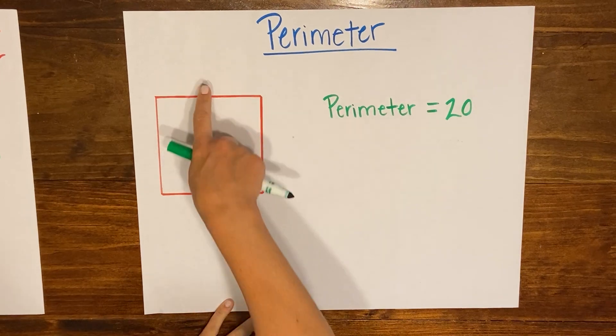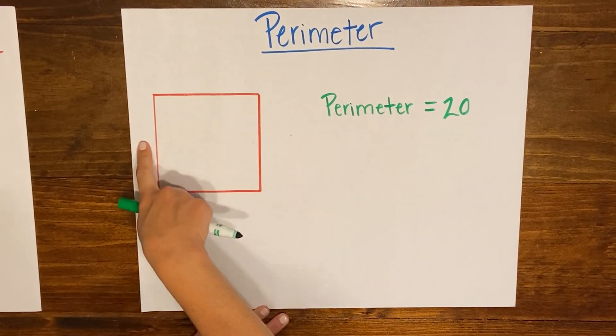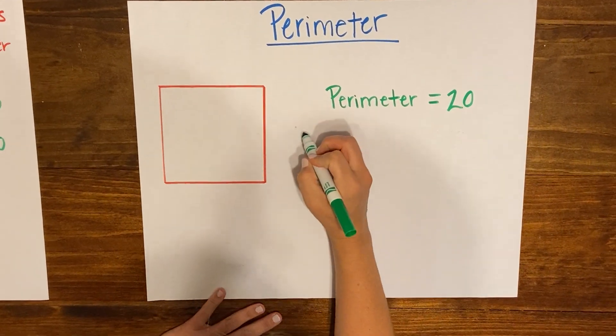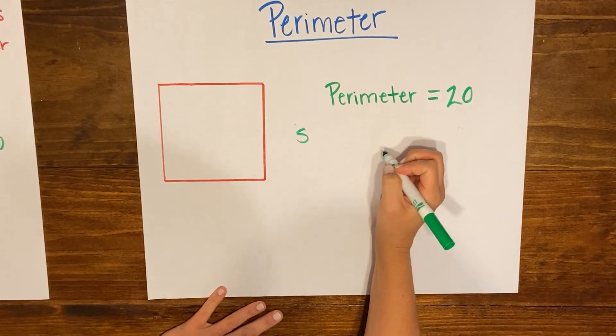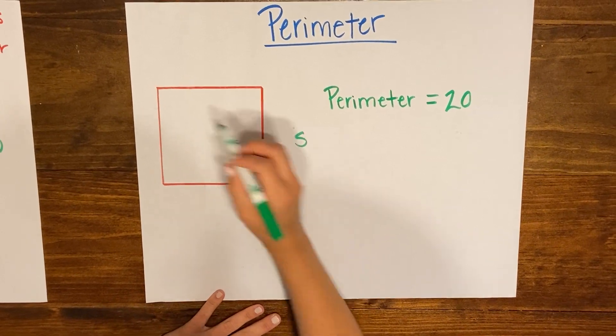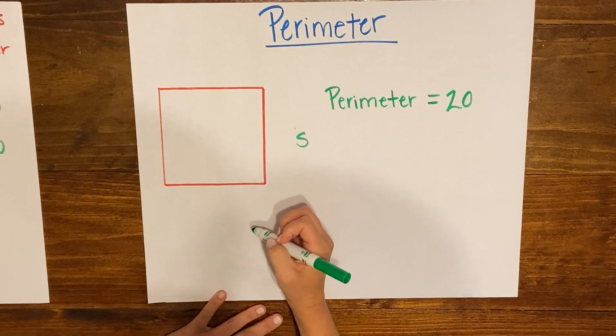So I know that if I add this side and this side and this side and this side I'm gonna get 20. So because I don't know the side I'm gonna put S, which is a variable—I'm gonna put S because I don't know the length of the side but I do know that all the sides are the same and that there's four of them. So if I have S plus S plus S plus S I should get 20.